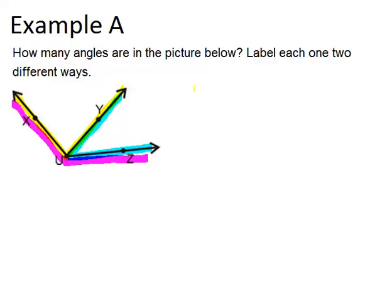So for the yellow angle, if we want to name it, we have to use three letters. Because if we just used U, angle U, that could mean any of the angles in this picture. So you have to use three letters, and U has to be the second letter. So an example would be angle X, U, Y. And you can get that by just following the angle around and picking the three points that you end up with.